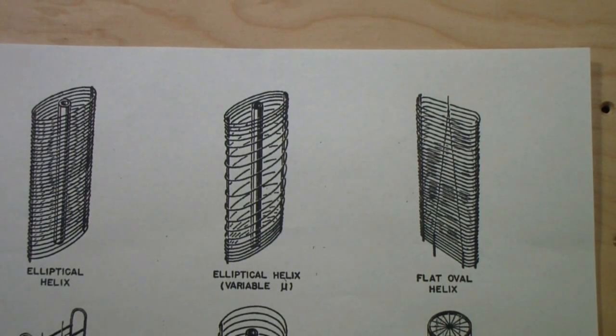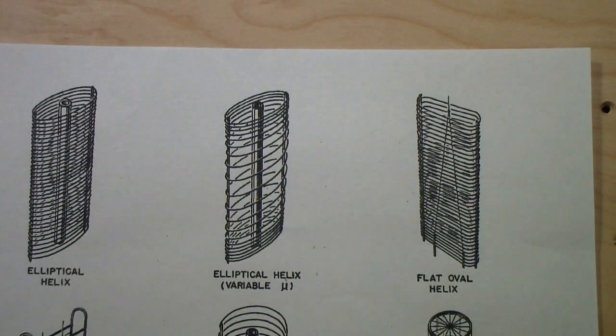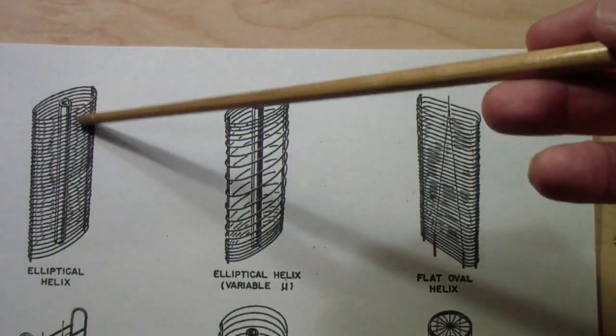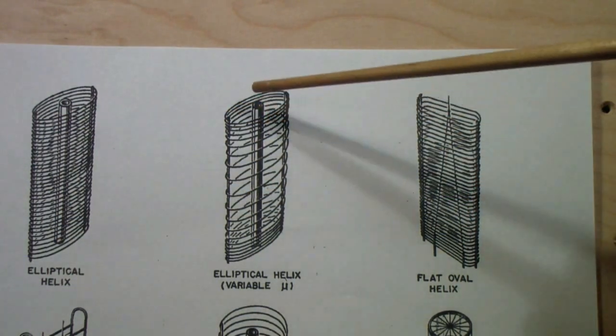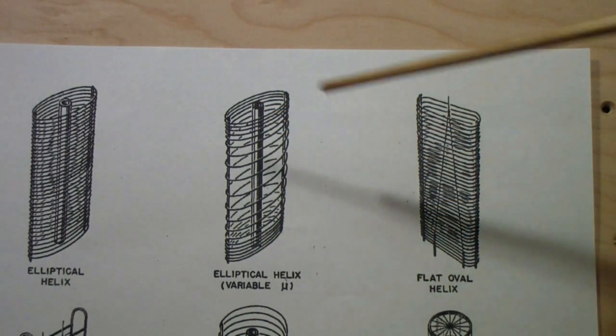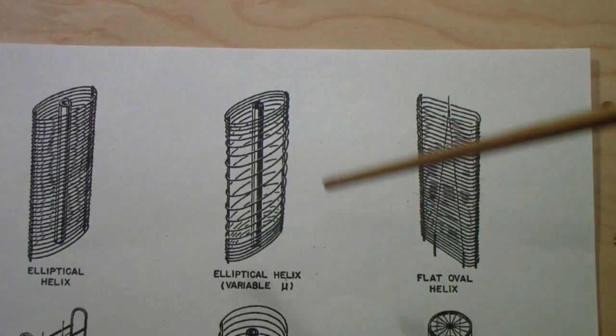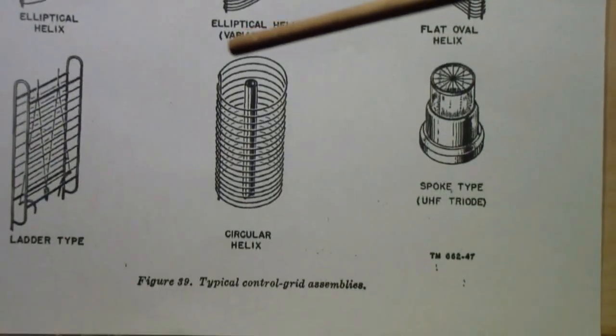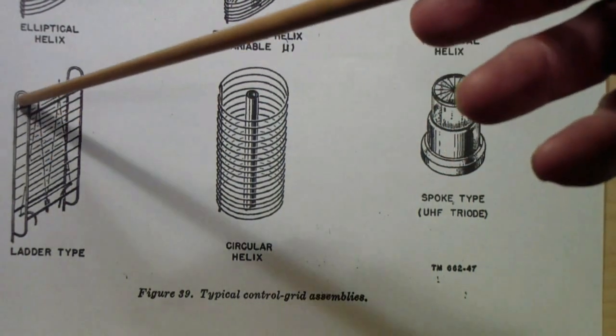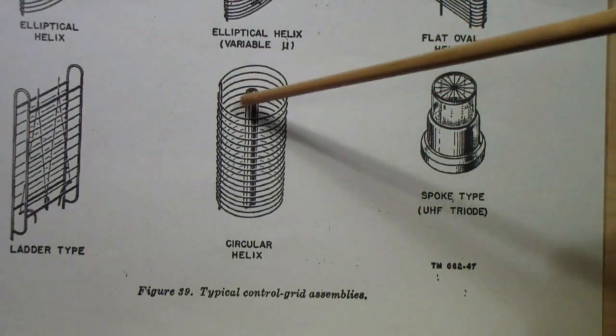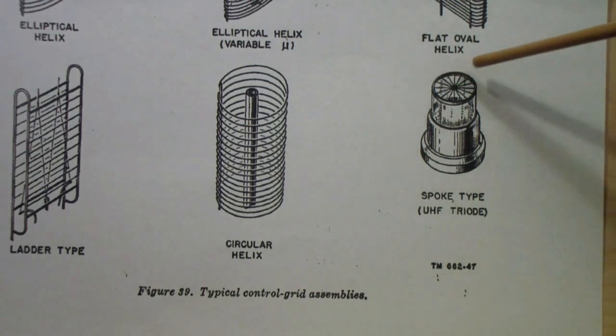I mentioned the spiral control grid in the triode we just looked at. There are a number of ways that you can construct control grids. This is a more or less uniform control grid. This has variable spacing and is used in a special kind of tube called a variable mu tube. Here is a flat oval type. This is the ladder. You wrap the wire around the insulators. This is a circular helix, and then there are some special types that are used in microwave tubes.